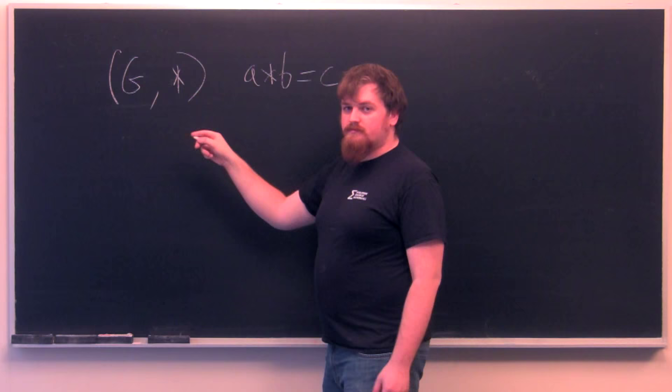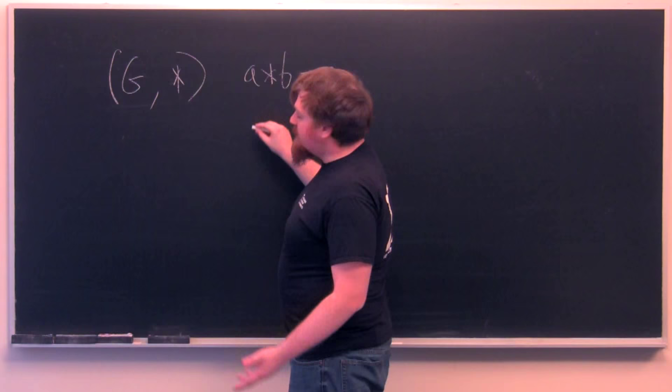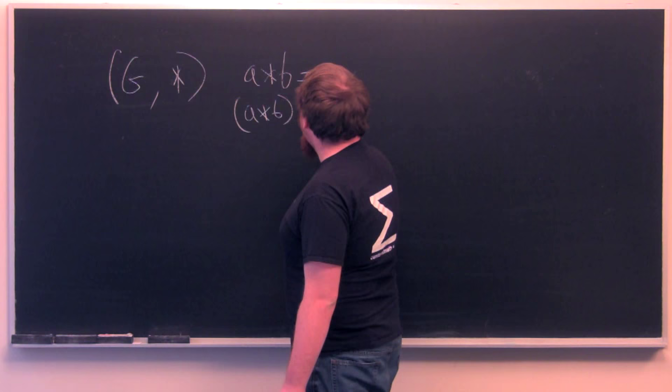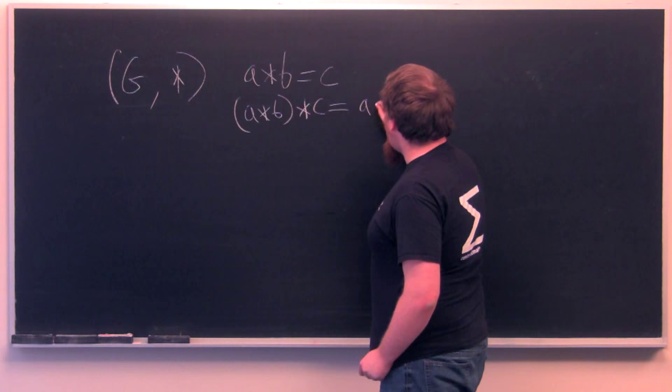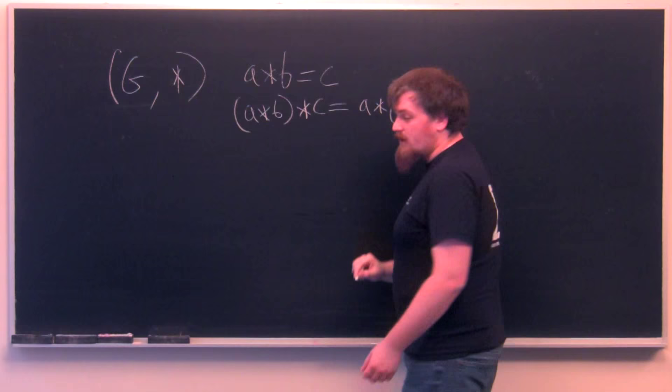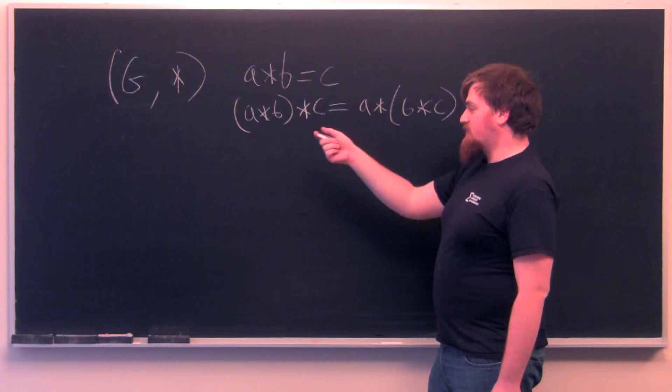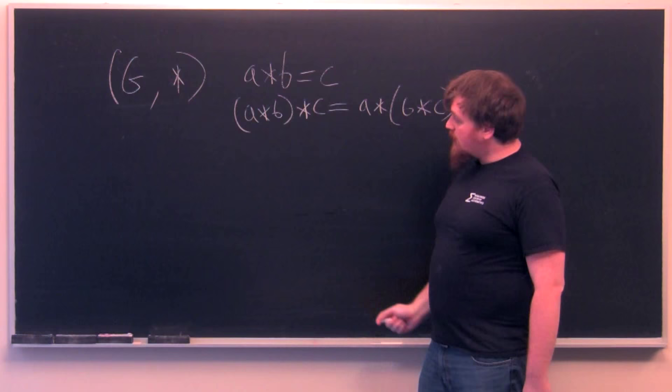Second of all, we need that for any a, b, and c, a times b times c equals a times b times c. This is the associative law that you may know from arithmetic, which has this form when you're talking about addition or multiplication.